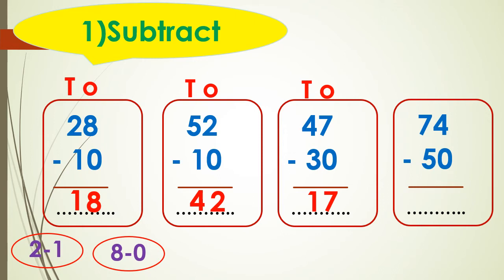The last question: we have 74 minus 50. As we said, first I'll write ones and tens. We'll start subtracting by ones: 4 minus 0 in the ones — 4 minus 0 equals 4. Then look at the tens: we have 7 minus 5 — 7 minus 5 equals 2. So I write 2 in the tens place.